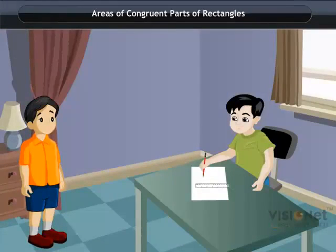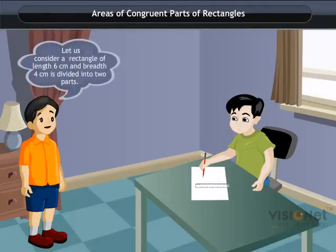Areas of congruent parts of rectangles. Let us consider a rectangle of length 6 cm and breadth 4 cm divided into two parts.